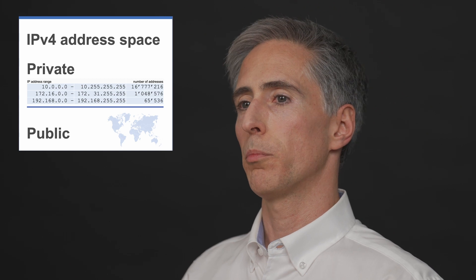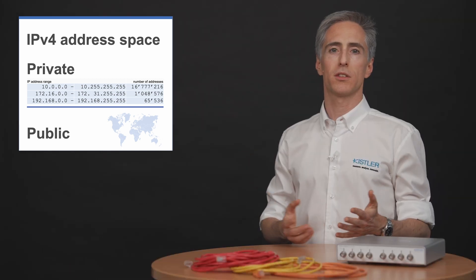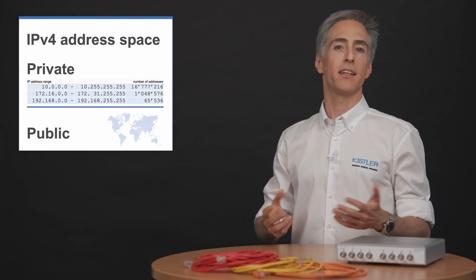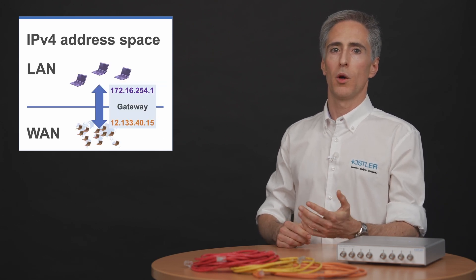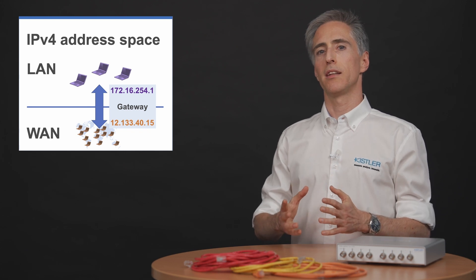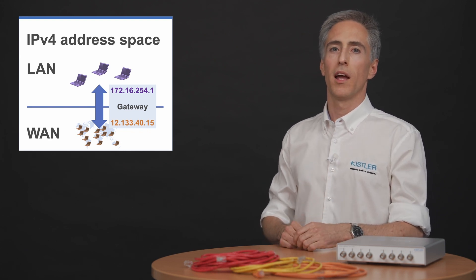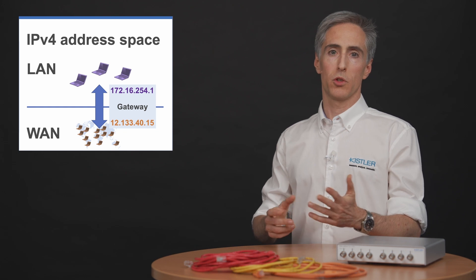The remaining addresses are for public use, for web servers which should be reachable within the entire internet. A gateway with two addresses, one for each side, is the interface between these two worlds. At home, that's usually your router's job.